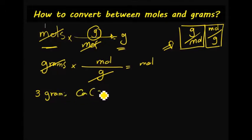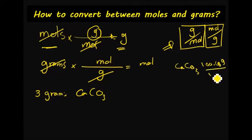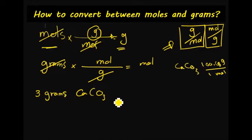...the molar mass of calcium carbonate is 100.08 grams over one mole. I want to convert from three grams of calcium carbonate to moles. So should I multiply by grams over moles, or moles over grams?